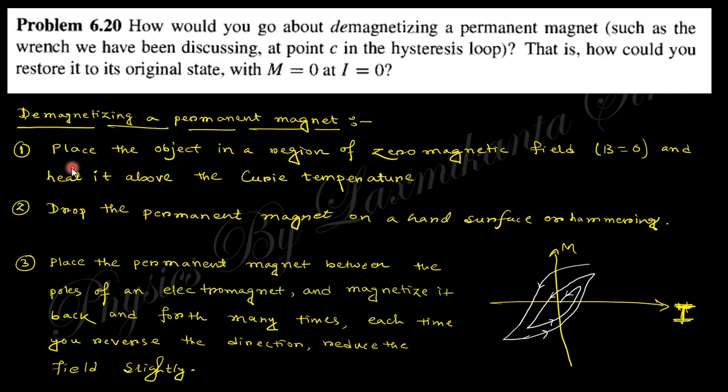The three most important processes are: first, place the object in a region of zero magnetic field and heat it above the Curie temperature — if you place the permanent magnet in zero magnetic field and heat it up to the Curie temperature, it will be demagnetized. Second, drop the permanent magnet from a height onto a hard surface, or you can hammer this magnet — it will be demagnetized.